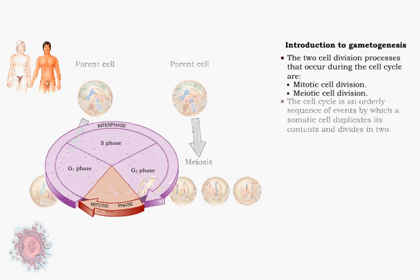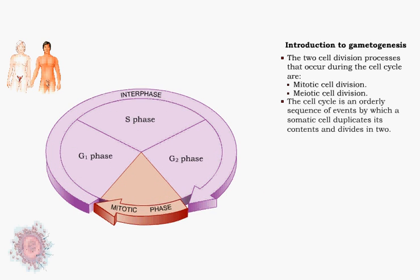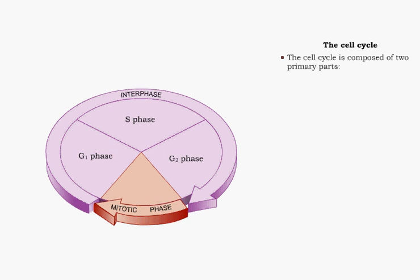The cell cycle is an orderly sequence of events by which a somatic cell duplicates its contents and divides in two. The cell cycle is composed of two primary parts: interphase and mitotic phase.